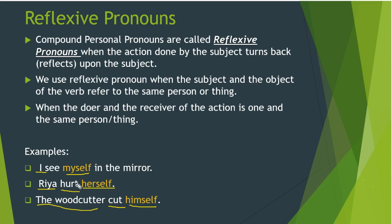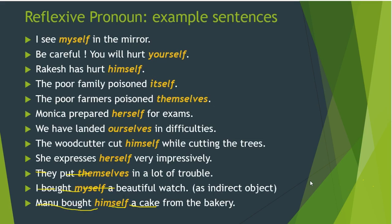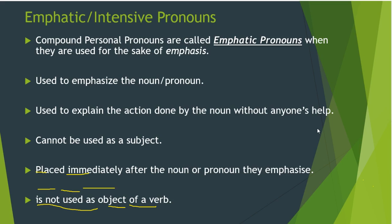So here 'myself', here 'herself', and here 'himself' — these are all reflexive pronouns. These example sentences we have already covered in our previous session.